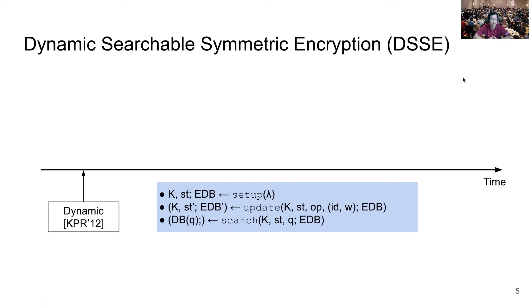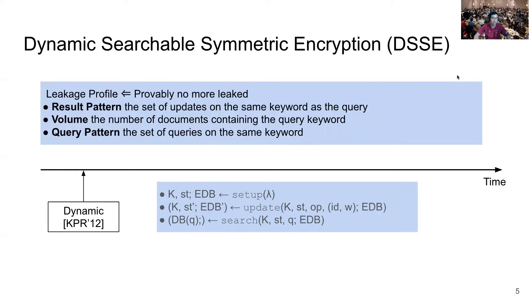One direction towards end-to-end encrypted keyword search is called dynamic searchable symmetric encryption, or DSSE. DSSE can be summarized as three interfaces: setup, update, and search. Update supports both addition and deletion, and search returns document identifiers for all documents containing the query keyword. DSSE constructions come with a leakage profile capturing all information leaked. Common leak functions include the result pattern — the set of updates on the same keyword — volume, the number of matching documents, and query pattern, the set of queries on the same keyword.